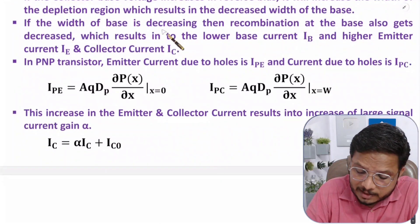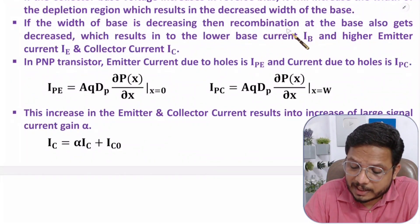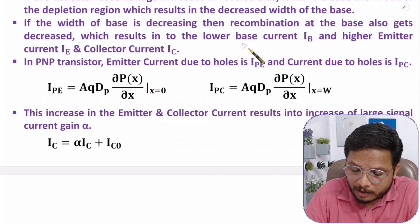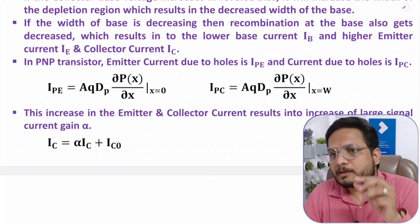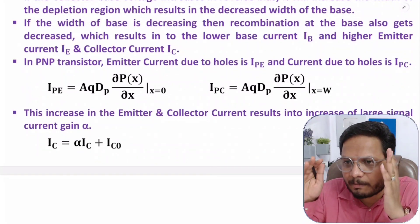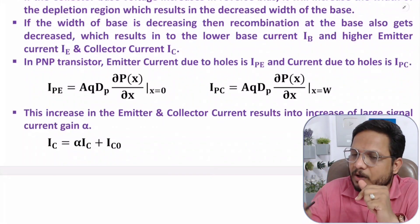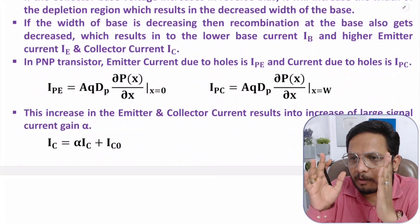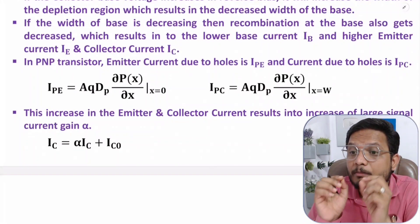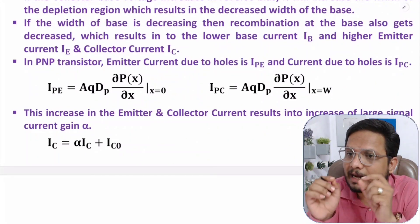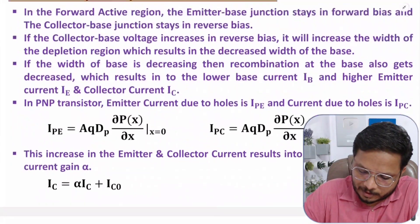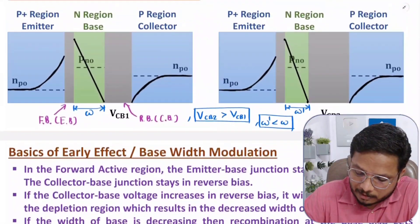If the base width decreases, recombination at the base also decreases, which results in a lower base current. As you increase the reverse bias voltage, the depletion region increases, the base width decreases, recombination decreases, and therefore the base current IB decreases.